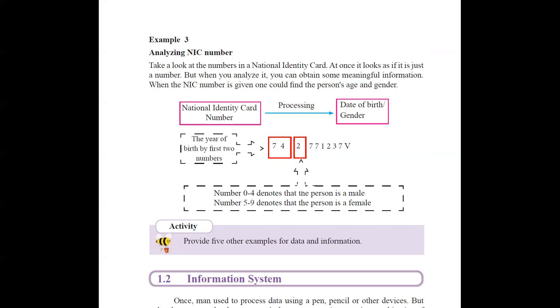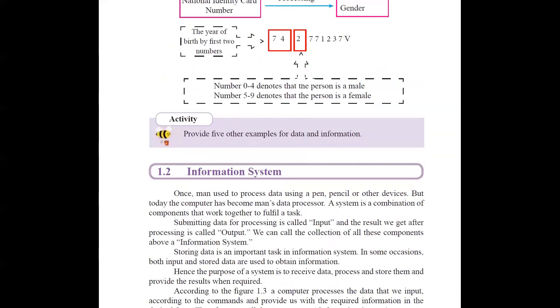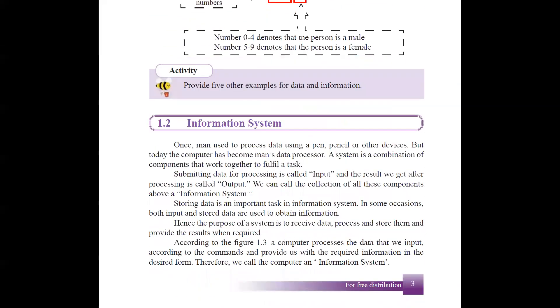So see, by analyzing the NIC number, you can know the birthday and the gender of a person. So next part is about information system.